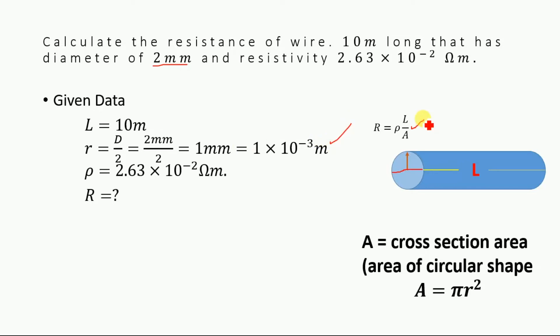This is the equation for the resistance of a wire. In this equation, this term denotes the resistivity of the wire and is a constant. Resistance is directly proportional to the length of the wire and is inversely proportional to the cross-sectional area. This is the cross-sectional area. Actually, this area is in a circular shape, and we know that the area of any circle is equal to pi r squared.